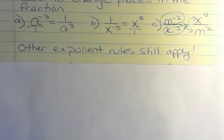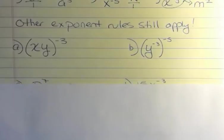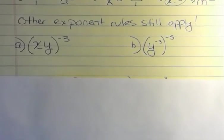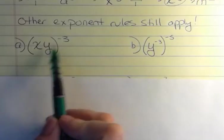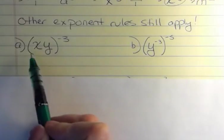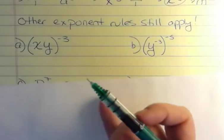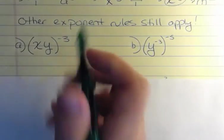But remember, other exponent rules still apply, so you don't want to be forgetting those. Let's look at these two problems. Remember the exponent rule that says if you have two factors raised to a power, they both go to a power? First, remember this rule that says what we really have here is x to the negative third and y to the negative third.